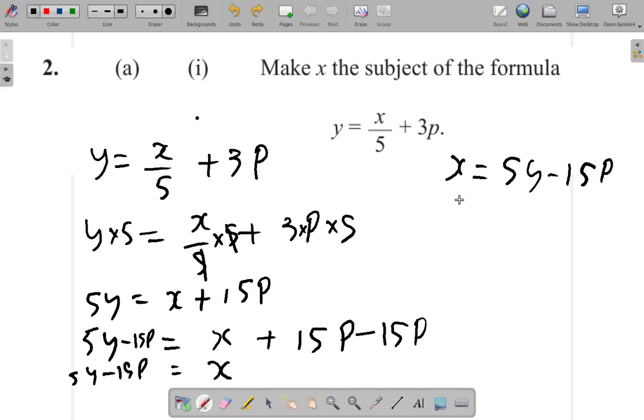I could factorize and put 5 outside the bracket. Inside the bracket, I have y minus 3p. Did you see how that worked? 5 into 5y goes y alone. 5 into 15p goes 3p. I could multiply out the brackets. 5 times y gives 5y. 5 times 3 gives 15.